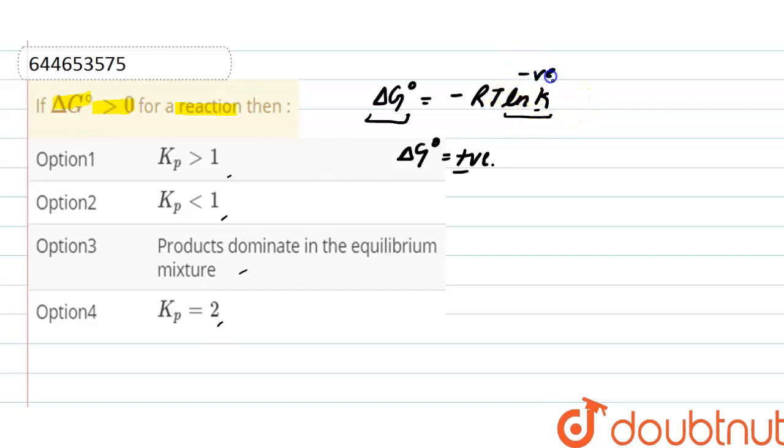If that ln K or the value of K is negative, then this negative and this negative makes ΔG° positive. So here the value of equilibrium constant must be negative or we can say less than one for a